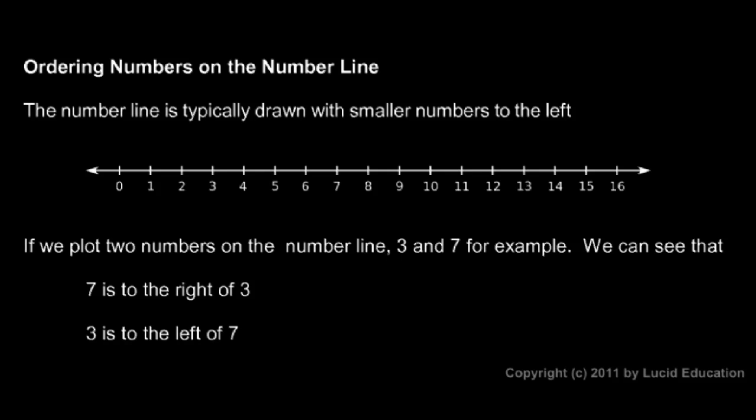If we plot two numbers on the number line—that just means drawing a little dot at the position where those numbers are—for example the numbers 3 and 7, we can draw a dot here at 3 and another one over here at 7. So those two numbers are plotted on the number line.